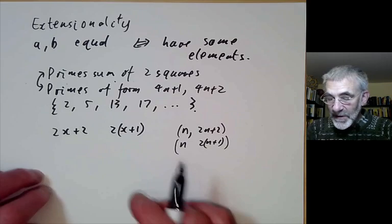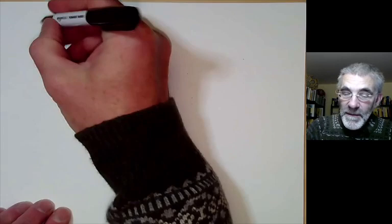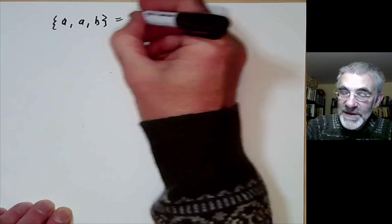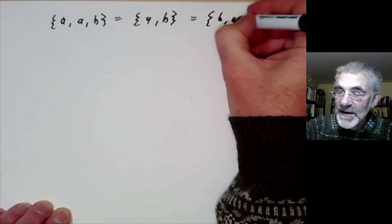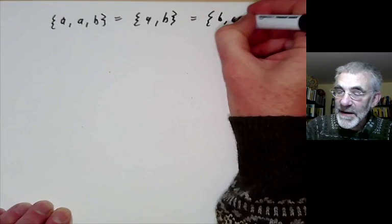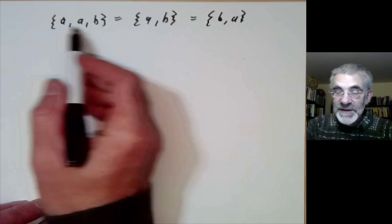So what effect does the axiom of extensionality have? Well, first of all it means that sets like {A,A,B} is the same as the set of elements {A,B} and this is the same as the set of elements {B,A}. In other words, it doesn't matter what order you put elements in the set in and it doesn't matter if you list some items several times.